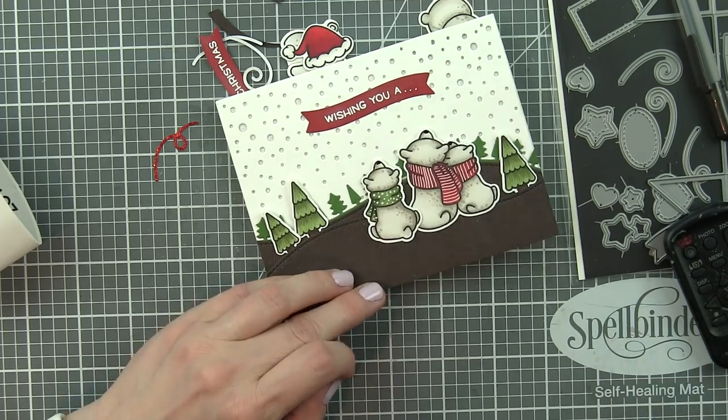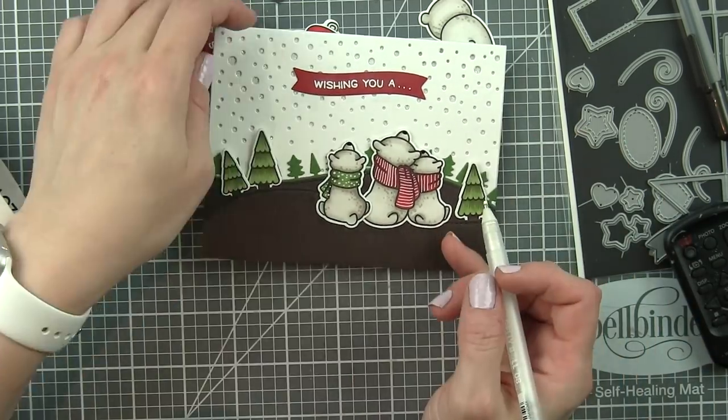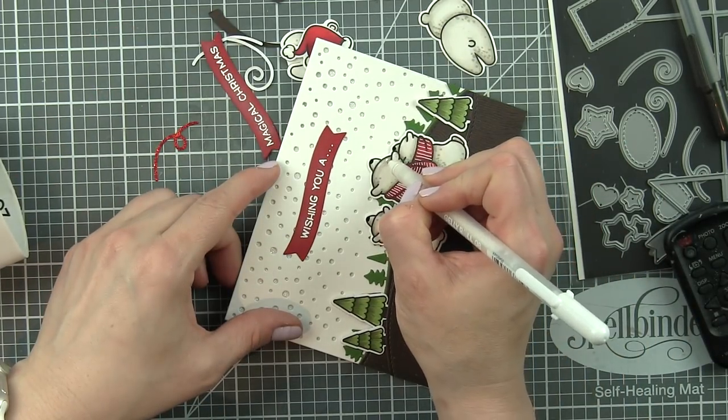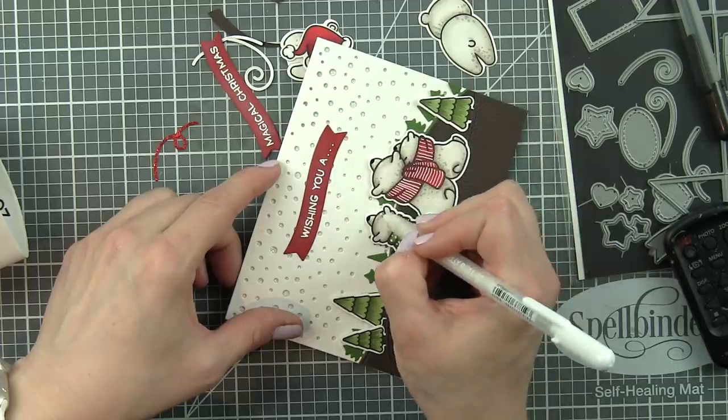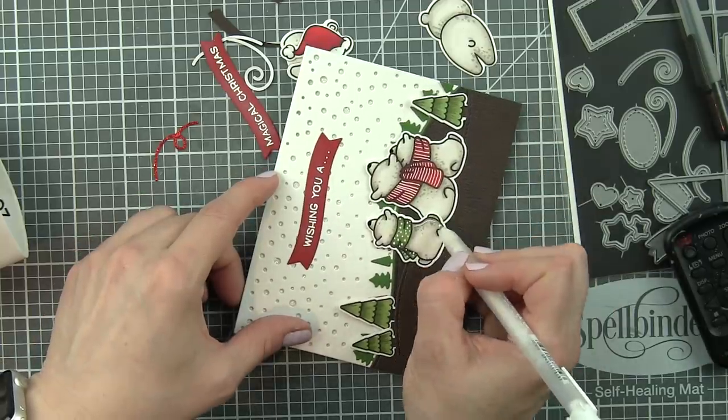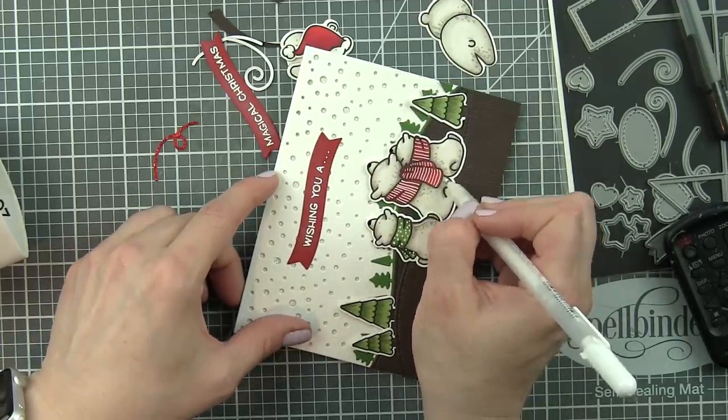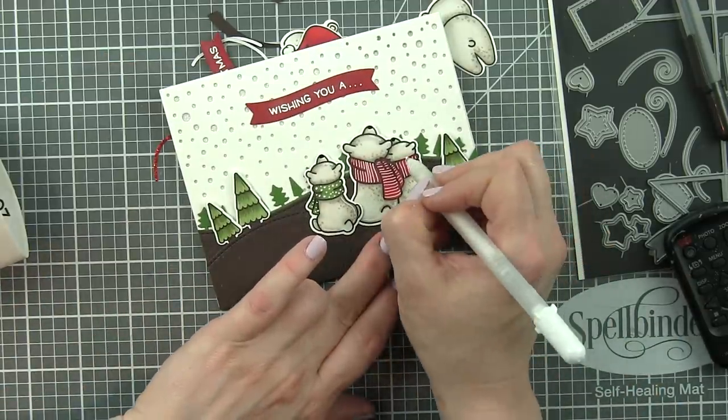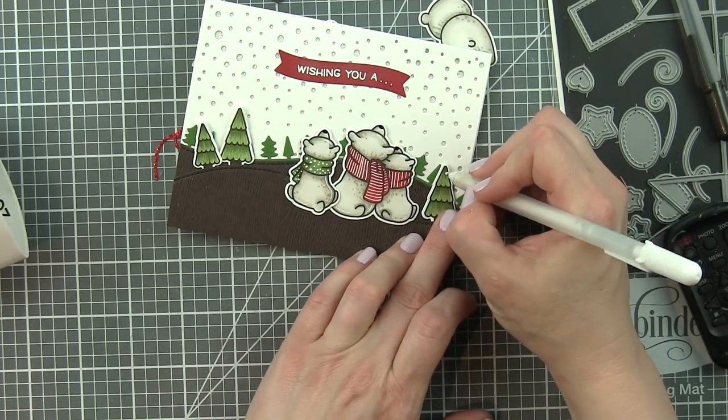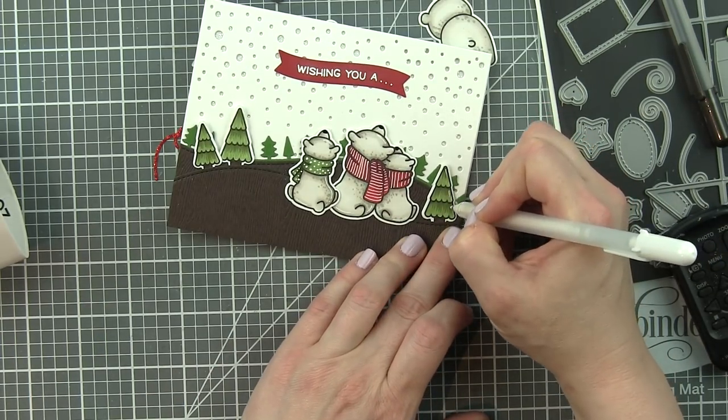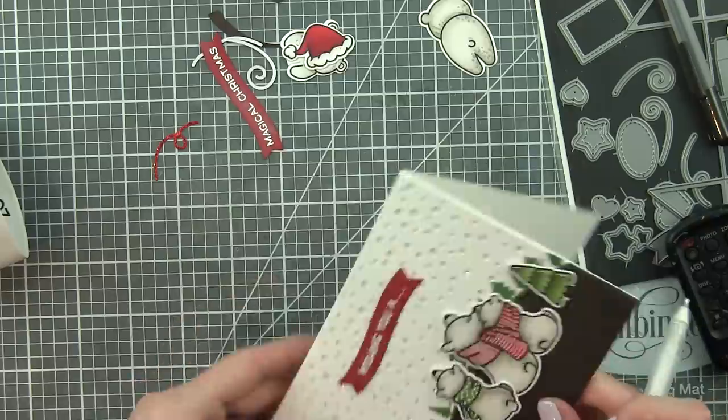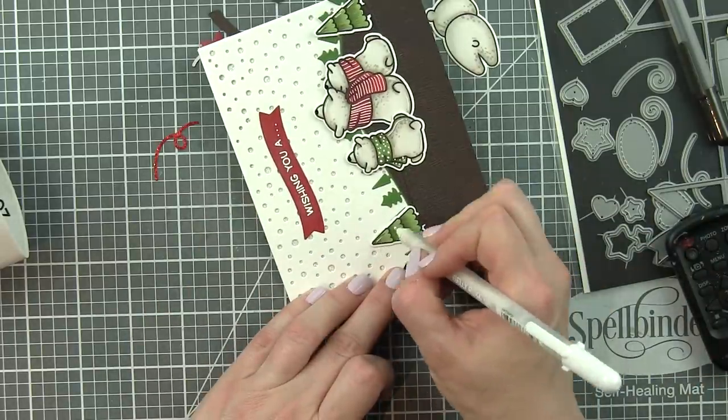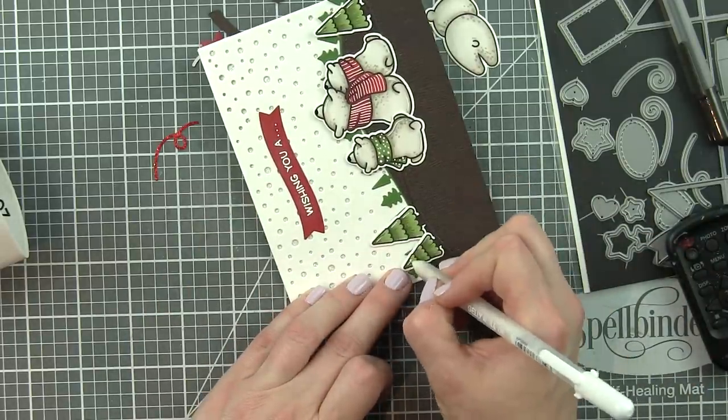And then I am going to add some little white highlights to the stamped bears. And I'm going to add them to the trees. I added a black jelly roll pen to the noses. I think that because you're not seeing their face especially. I almost always do this when they're front facing as well. But I think it just kind of draws your eye and really defines their cute little noses. And then of course those little white highlights on the trees.